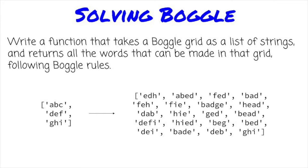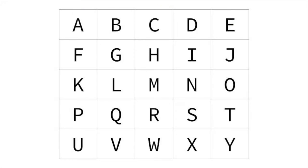I've seen many references to this problem, and it's great for understanding depth-first search. It also has an interesting, if not very useful, dynamic programming solution at the end. What is Boggle? Boggle is a word-finding game. You get a square grid of letters, and you can form words by connecting these letters together.